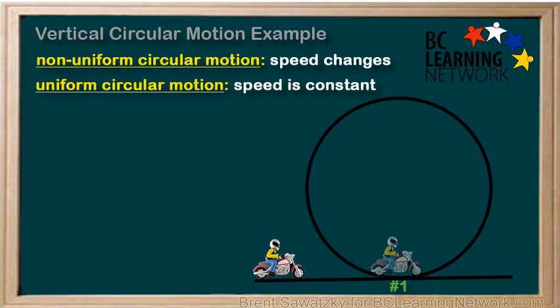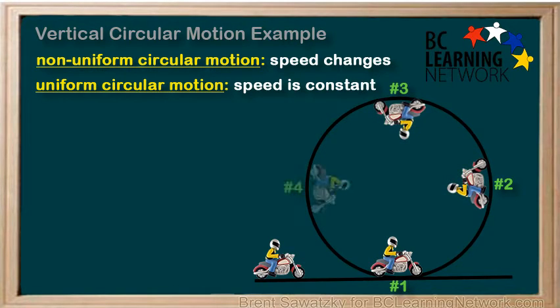Number one at the bottom here, number two as the bike is halfway up the loop, number three at the top of the loop, and number four as the bike is halfway down the loop.